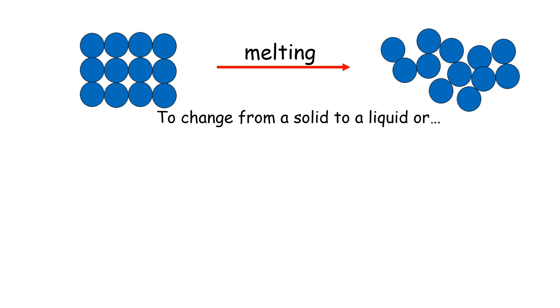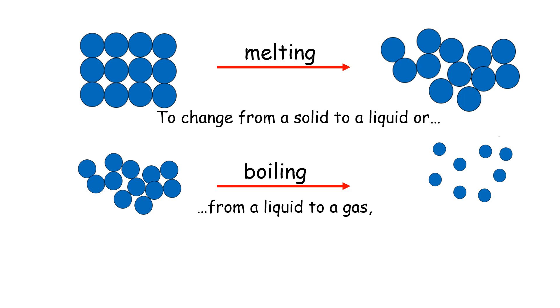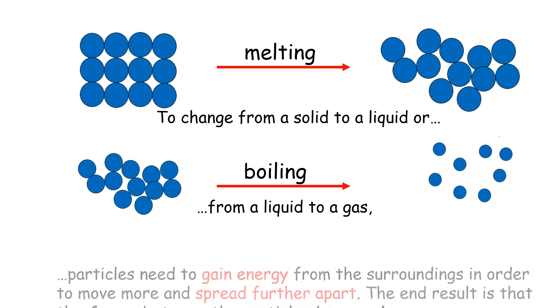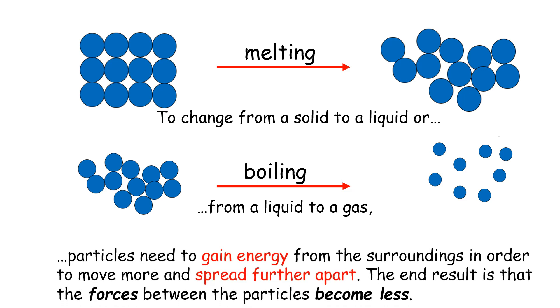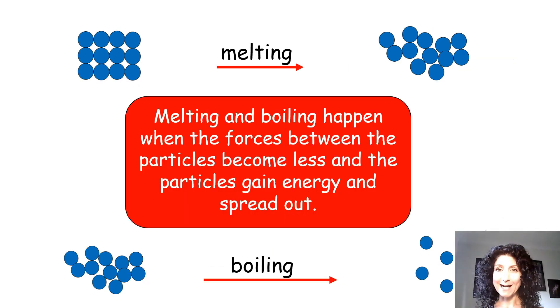For a substance to change from a solid to a liquid, or from a liquid to a gas, particles need to gain energy from the surroundings so they can move more and spread further apart. The end result is that the forces between the particles become less and the particles spread out more. This happens in melting and boiling. Let me recap. Melting and boiling happen when the forces between particles become less and the particles gain energy and spread out.